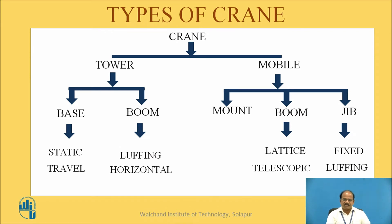Cranes are classified as tower cranes and mobile cranes. Tower cranes are further classified based on their base — static base being the most common case, though a travelling base is also possible — and based on boom type: luffing boom or horizontal boom. A horizontal boom is perfectly horizontal, while a luffing boom can change its inclination in the vertical plane. For mobile cranes, classification is based on mount — crawler mounted or tire mounted — and boom type: lattice structure or telescopic booms. In terms of jib, fixed jib or luffing jib options are also available.